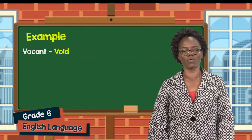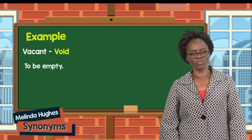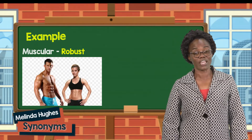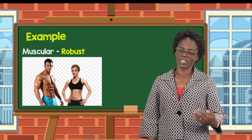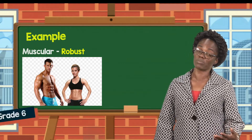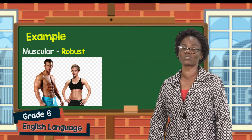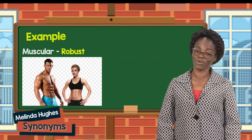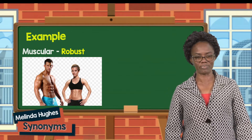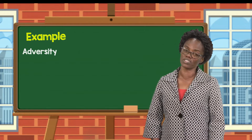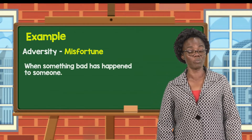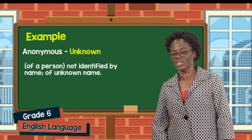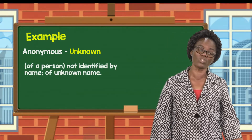Vacant or void, simply meaning to be empty. Muscular or robust — it is evident when you look at someone, most times the word muscular or robust is associated with males, but of course there are some females who are muscular and robust because they do bodybuilding. Next, we have adversity or misfortune — it simply means that something bad has happened to someone. Anonymous and unknown — anonymous simply means that it is not known, it is unknown.